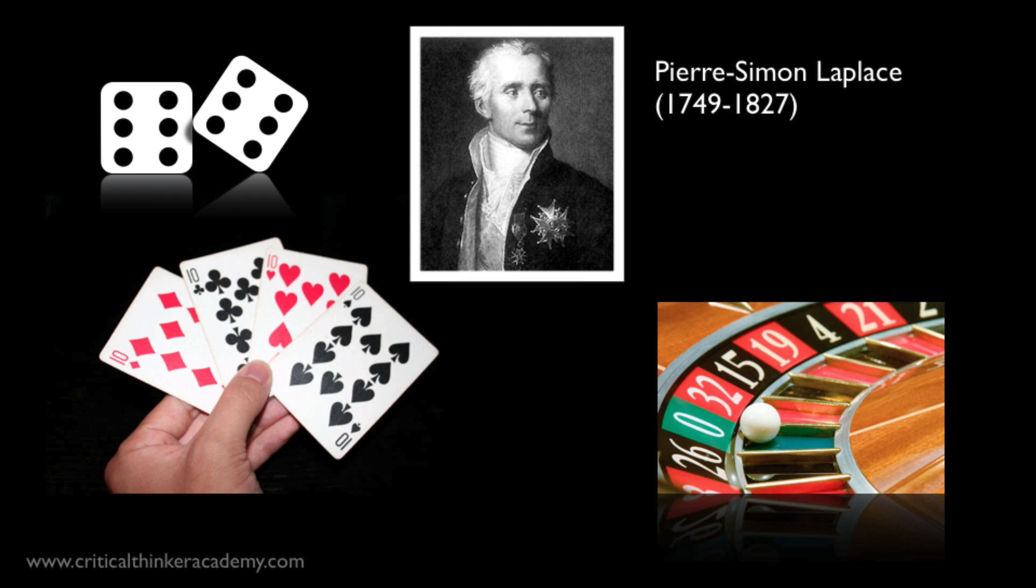These guys were trying to work out the principles that govern games of chance and gambling games, like dice and cards and roulette. And in particular, they were interested in working out the best betting strategies for different games. This was where the modern mathematical theory of probability was born.